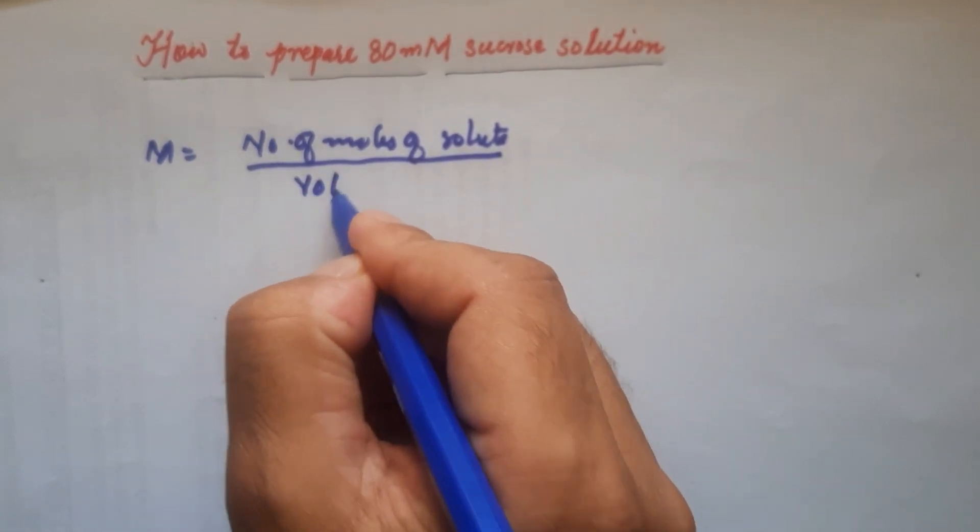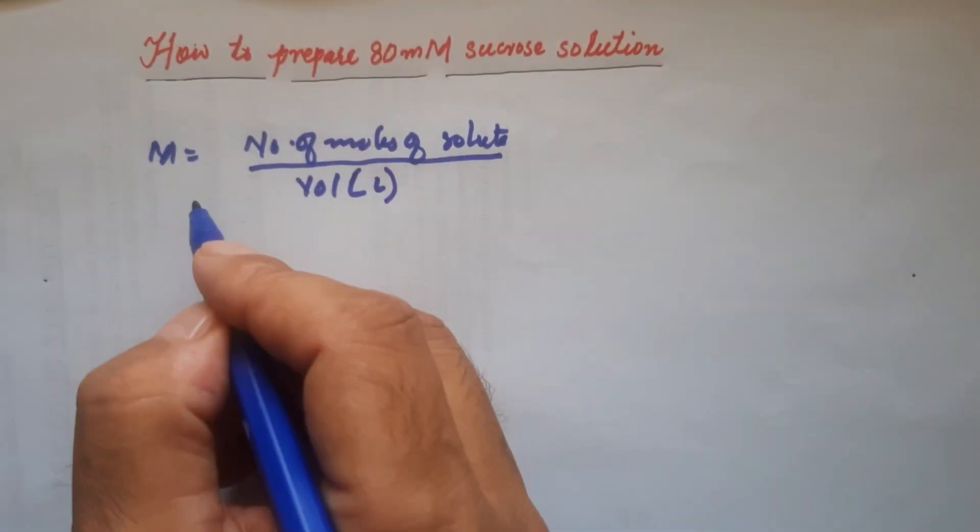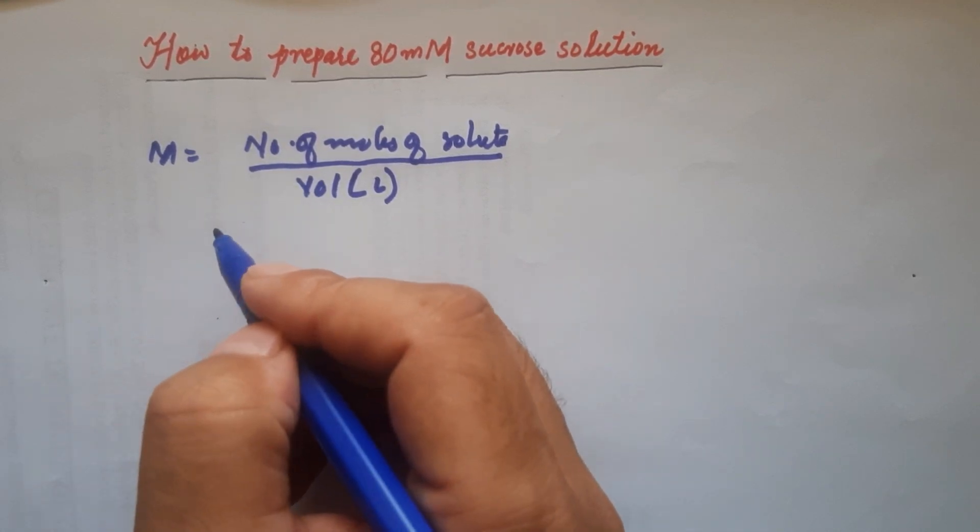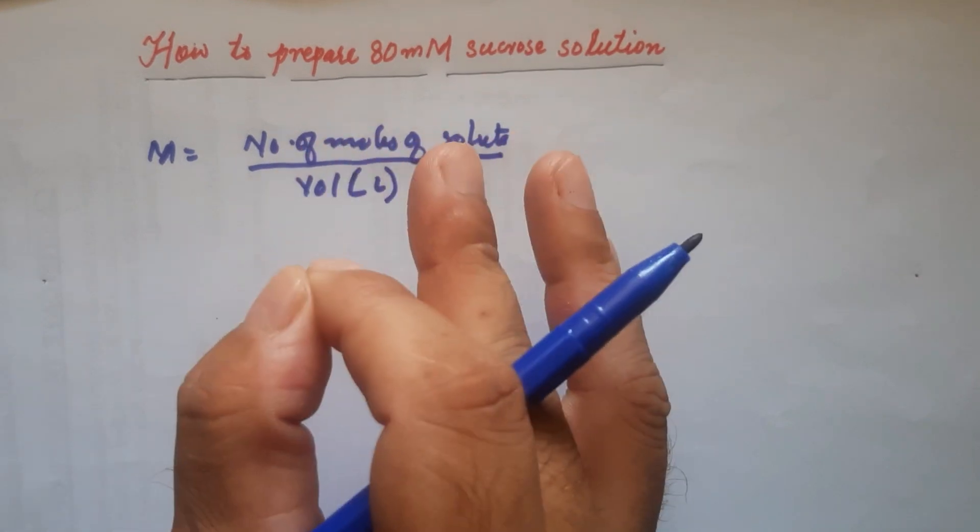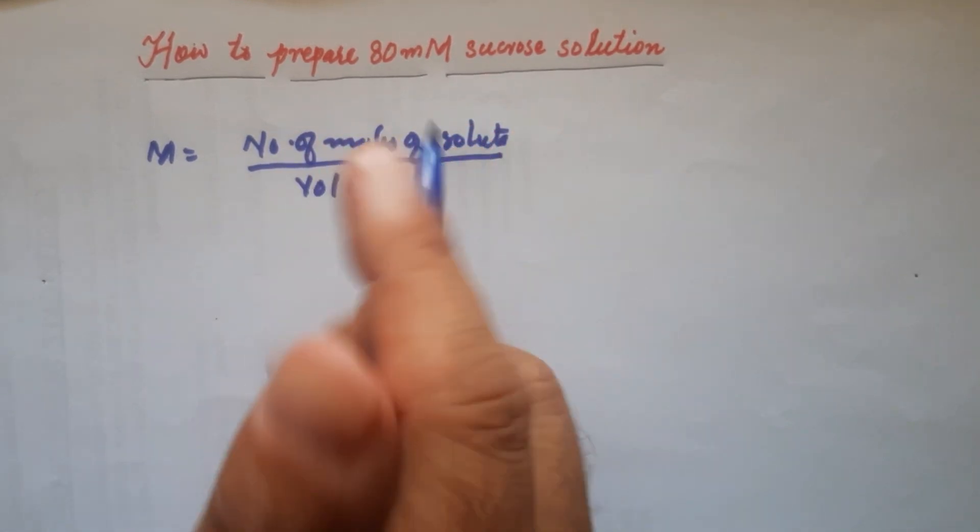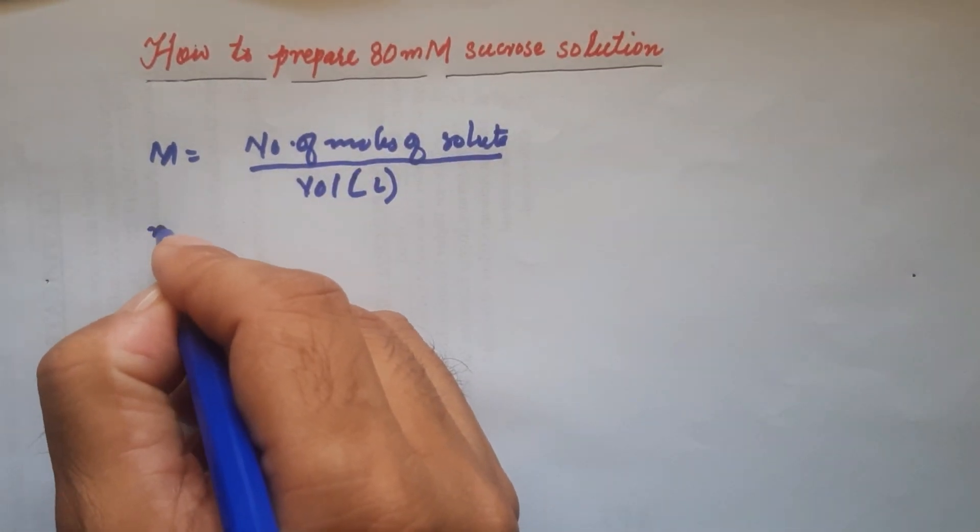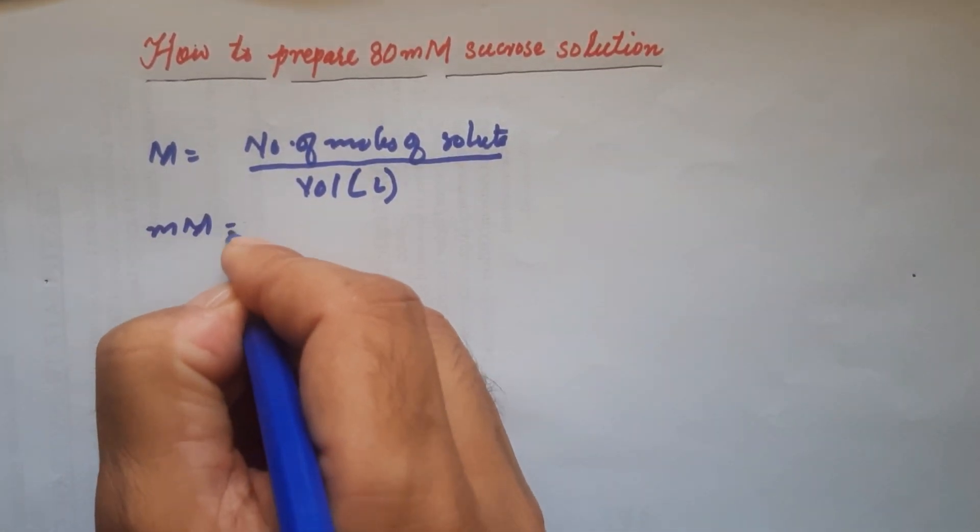And if you want to prepare a millimolar solution, you simply need to multiply it with 10 to the power minus 3. Like this: millimolar is equal to...